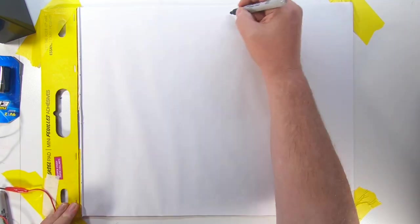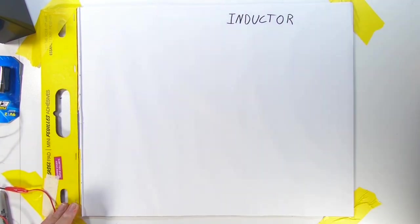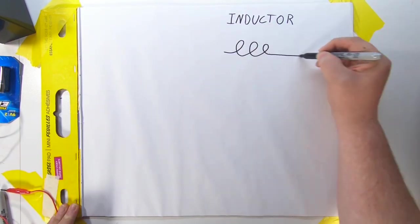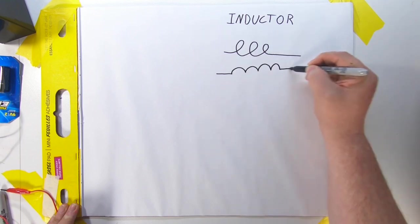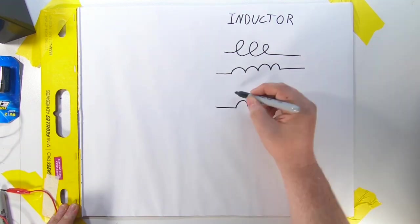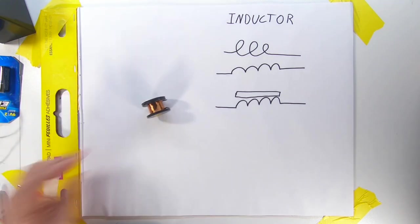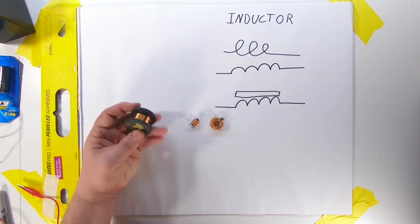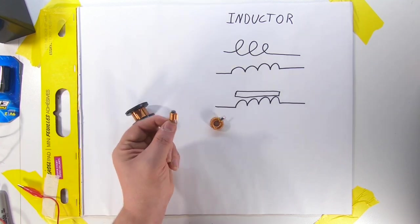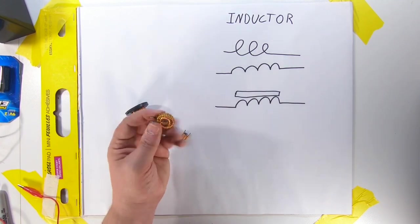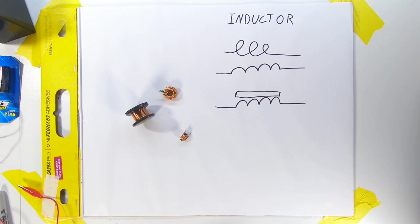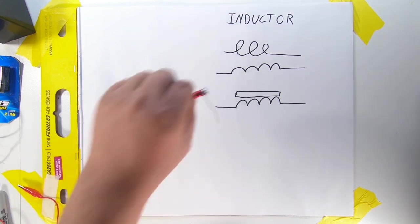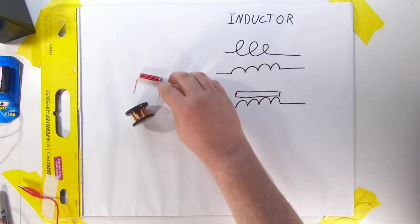The next component is called an inductor, and it has a few symbols. Sometimes it's a bit of a curly Q, sometimes it's those sort of half-loop humps, and sometimes it has the block above it. An inductor is kind of a surprising component. It is just a coil of wire. Sometimes the wire is wrapped around a bead or a donut of ferrite or some other material, which is when the symbol with the block above it is often used. Here is another inductor that's wrapped around a bolt, which I made myself just for this demonstration.